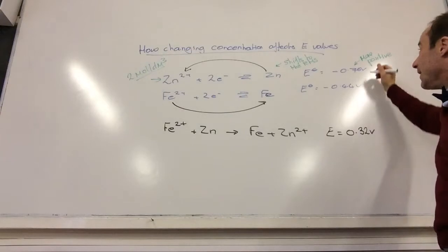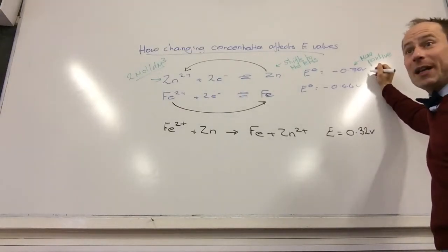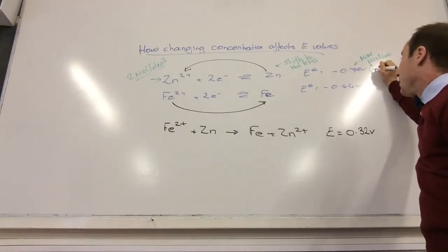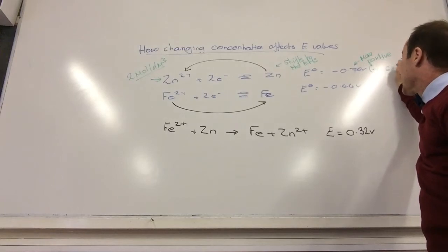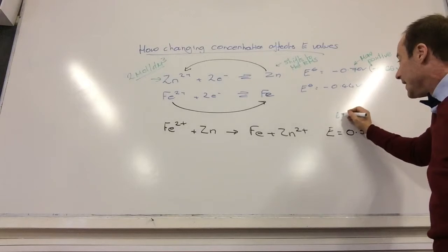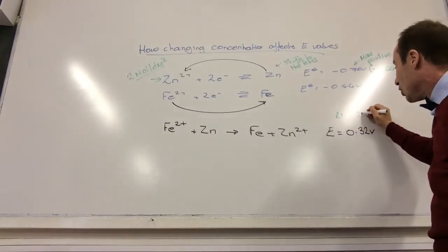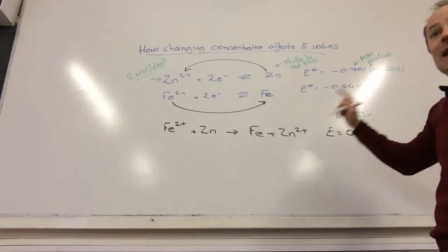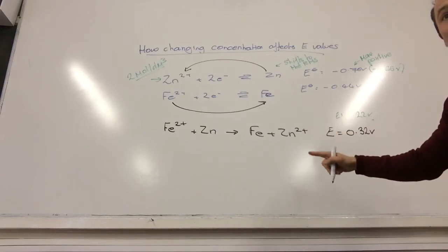So what will this be? This becomes more positive. So this is maybe now, I am just going to make up a value, 0.66 volts. So that is feasible. This becomes now, yep, E is now going to be 0.22 volts. So it is less feasible than it was.